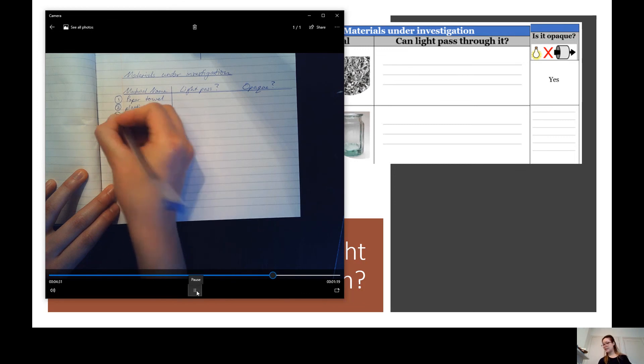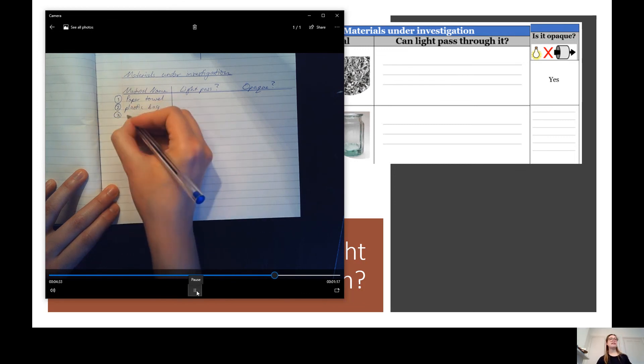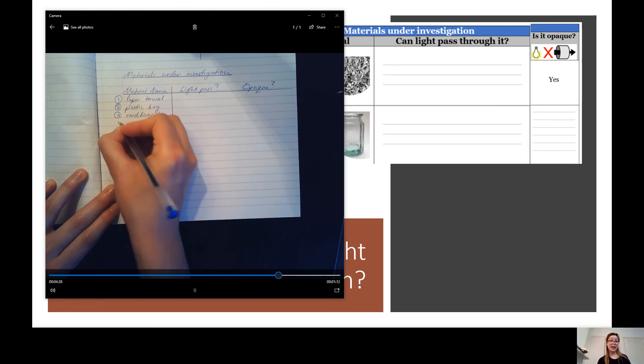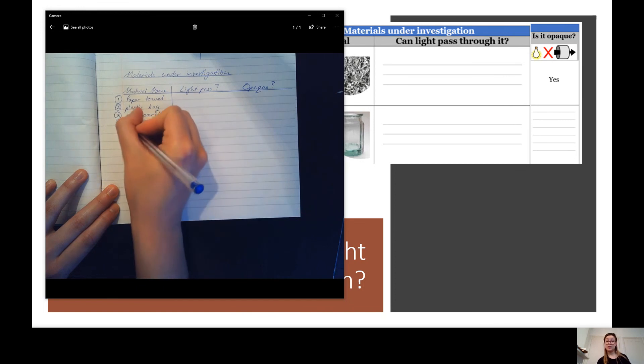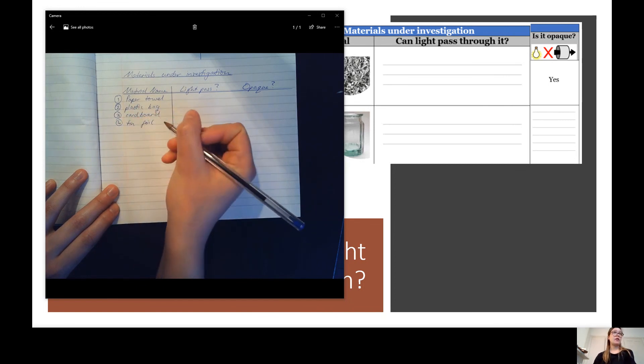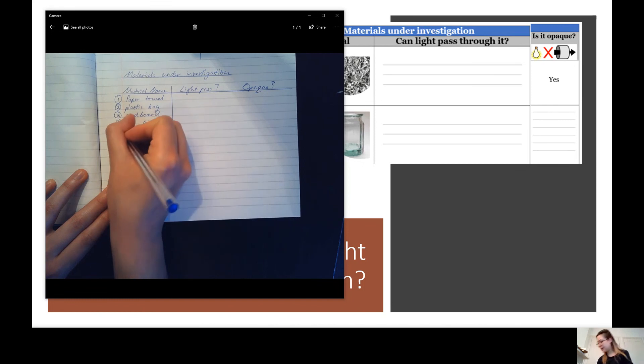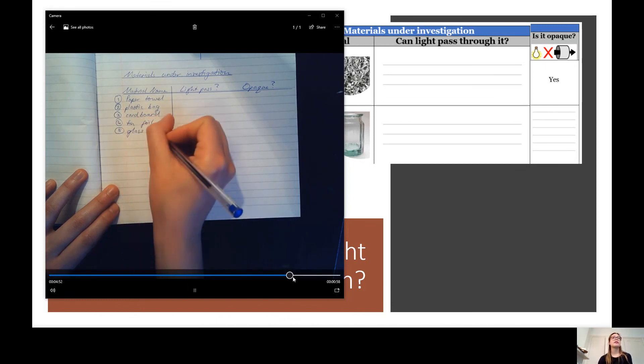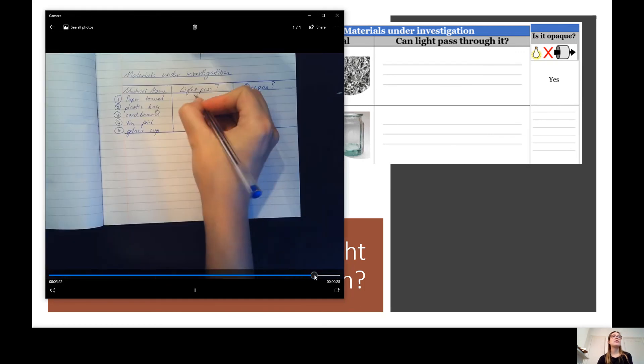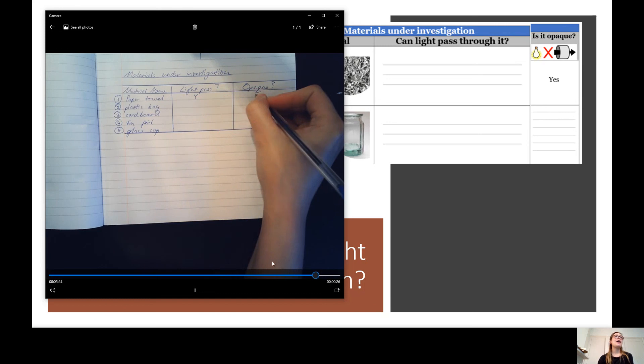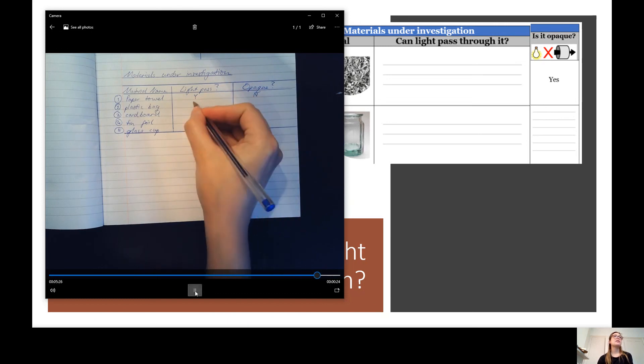And then you need to write down your five materials. If you would like, you can add other materials. You can add cloth or other materials that you might like that are fire safe. Plastic bag. Tin foil. And finally, glass cup. Then use a ruler to neatly draw your borders.